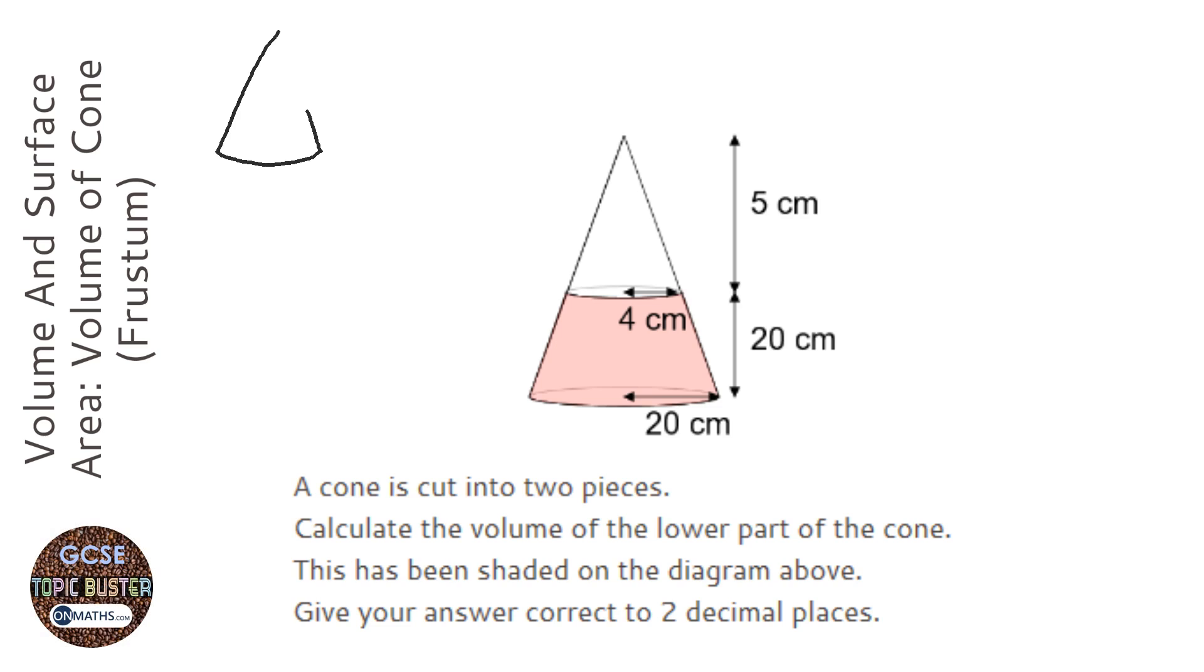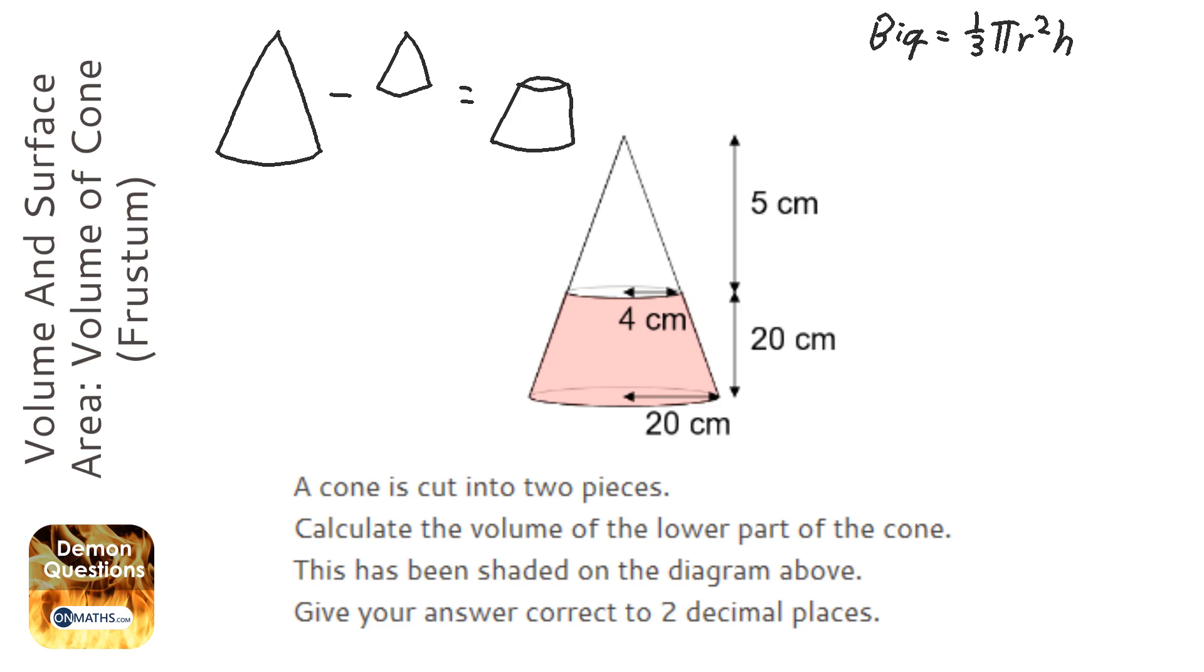So if I have the big cone and the small cone and take them away from each other that will equal that bottom shape. To work out the big cone I am going to use the formula 1/3 π r² h which is the formula for a cone.